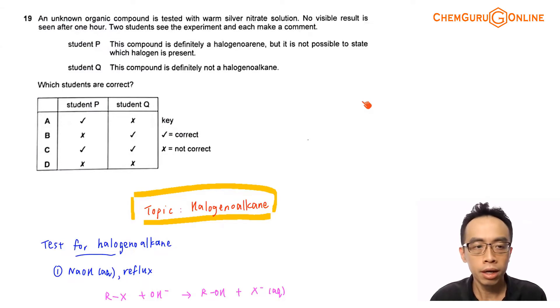Now question 19, an unknown organic compound is tested with warm silver nitrate solution. No visible result is seen after one hour. Two students see the experiment and each make a comment. Student P says that this compound is definitely a halogenoalkane, but it is not possible to state which halogen is present. Student Q says that this compound is definitely not a halogenoalkane. So basically we want to determine which students are correct, and we will run through options A, B, C, D from there.